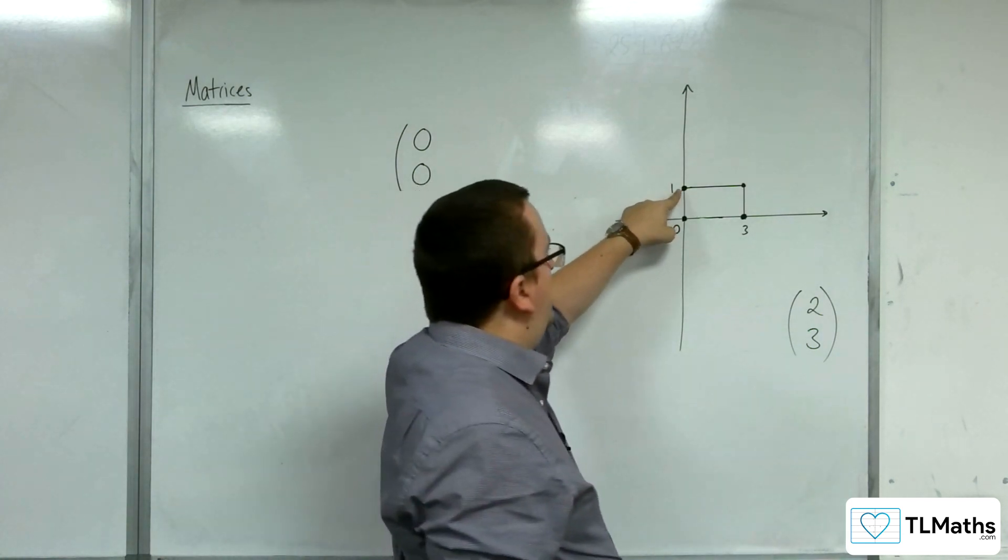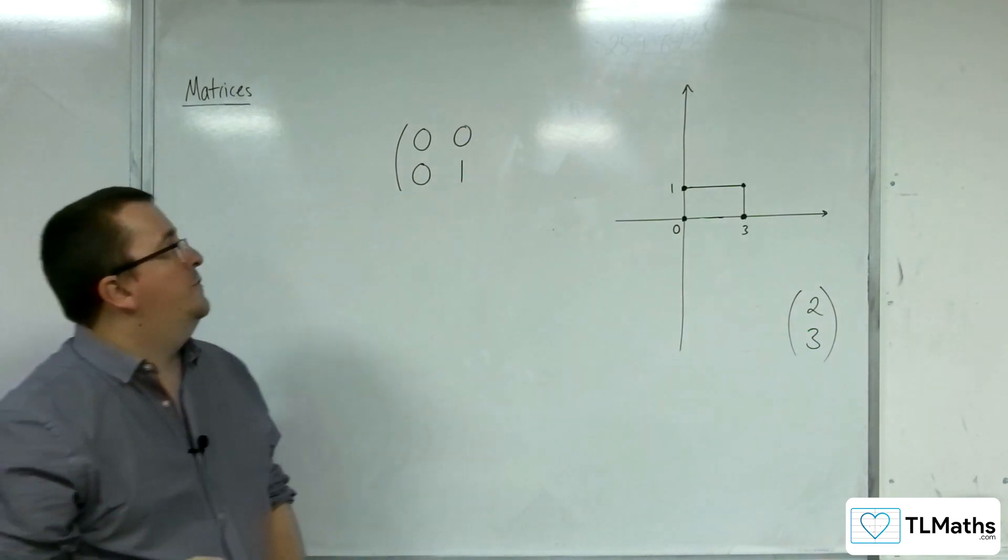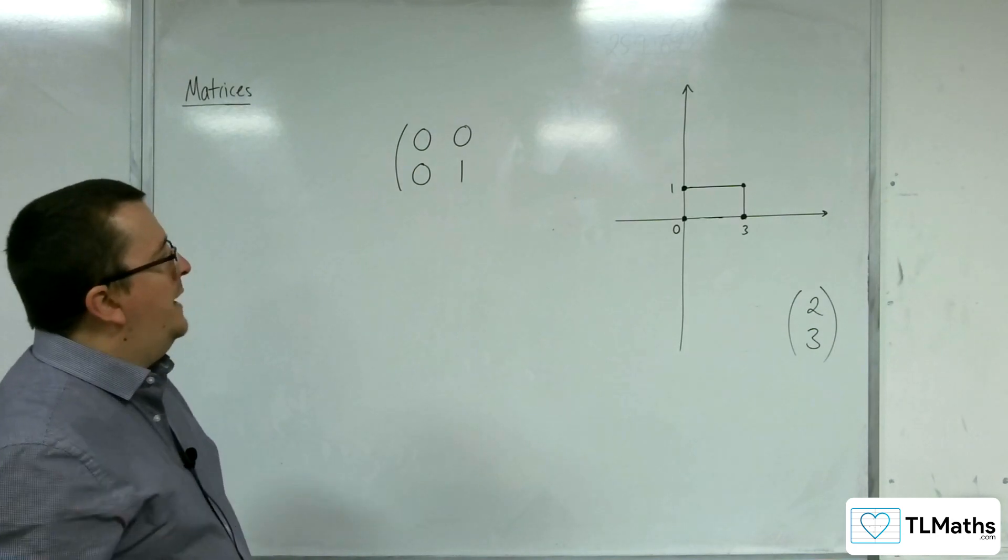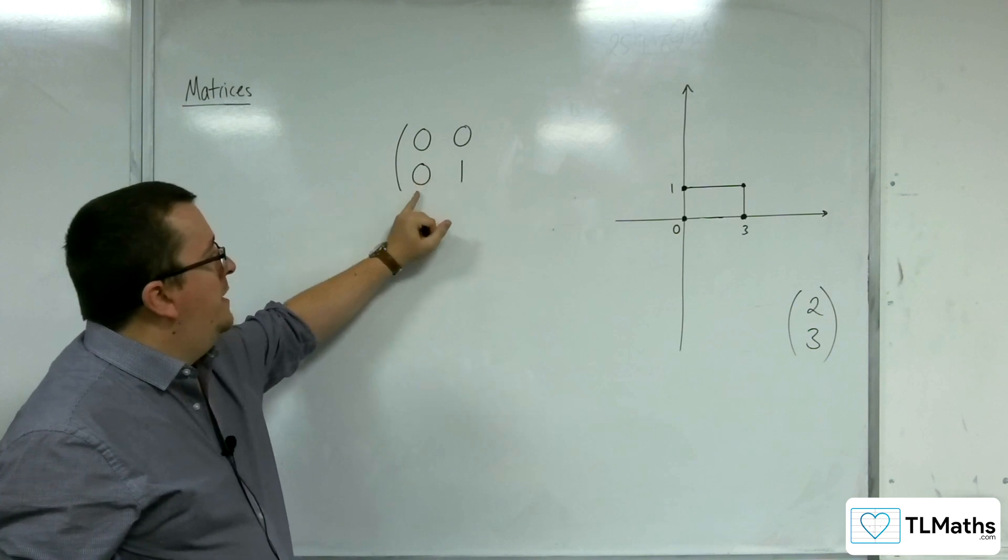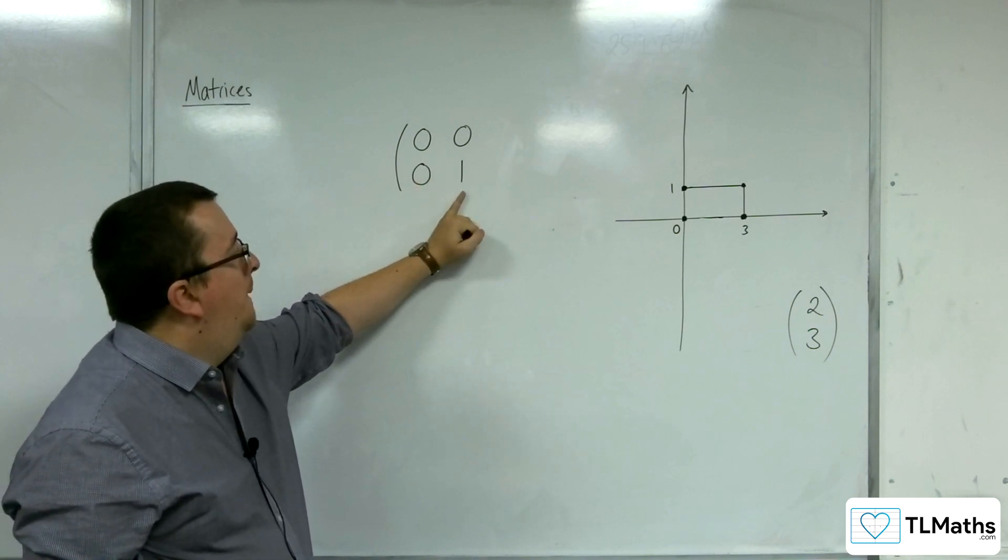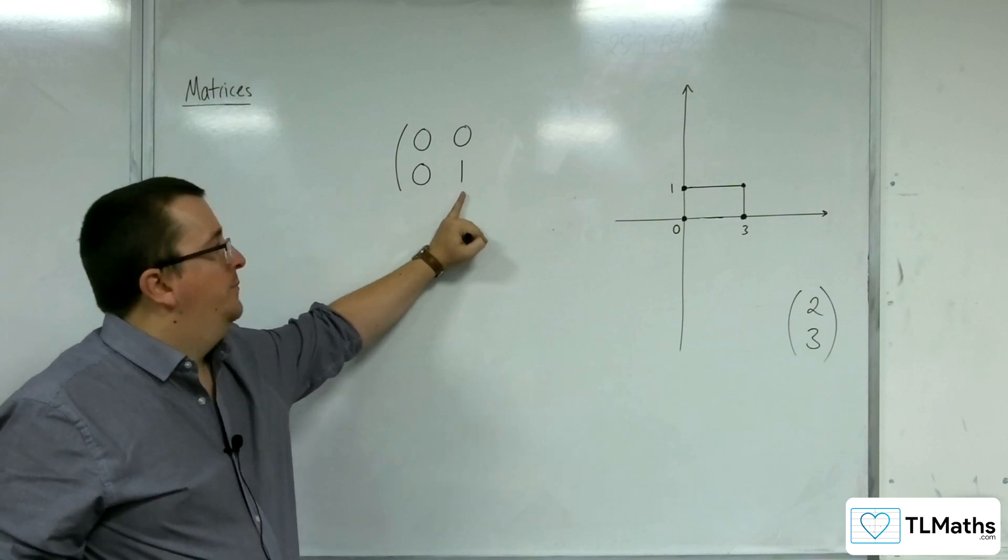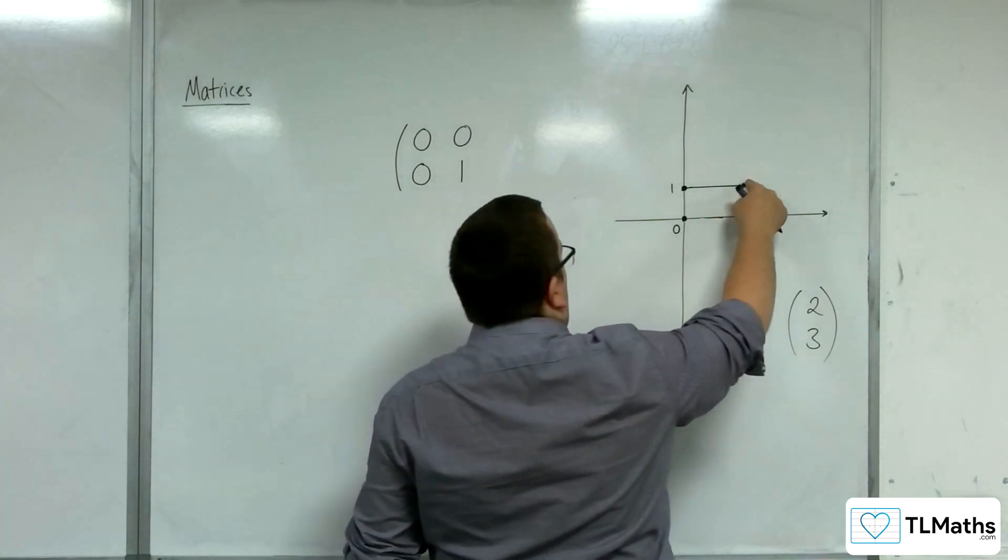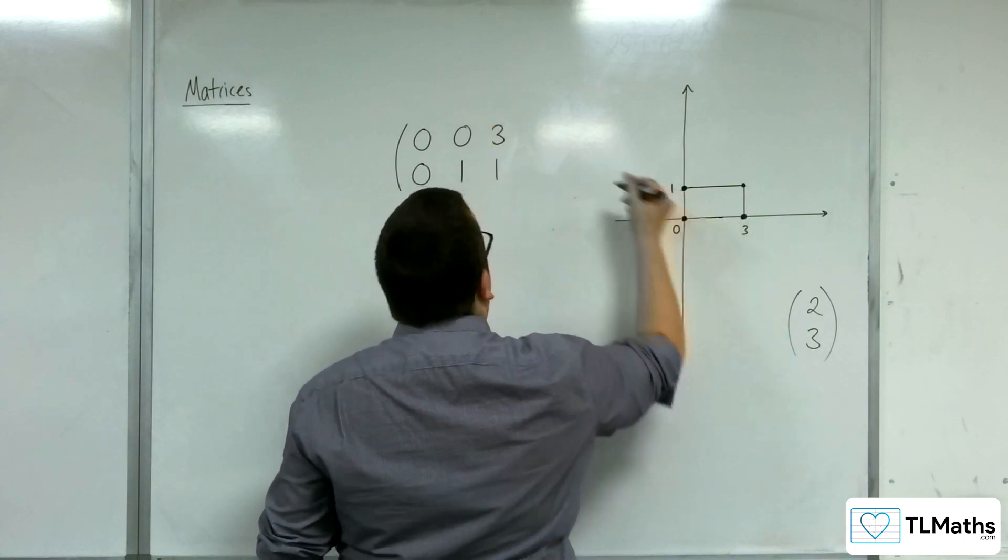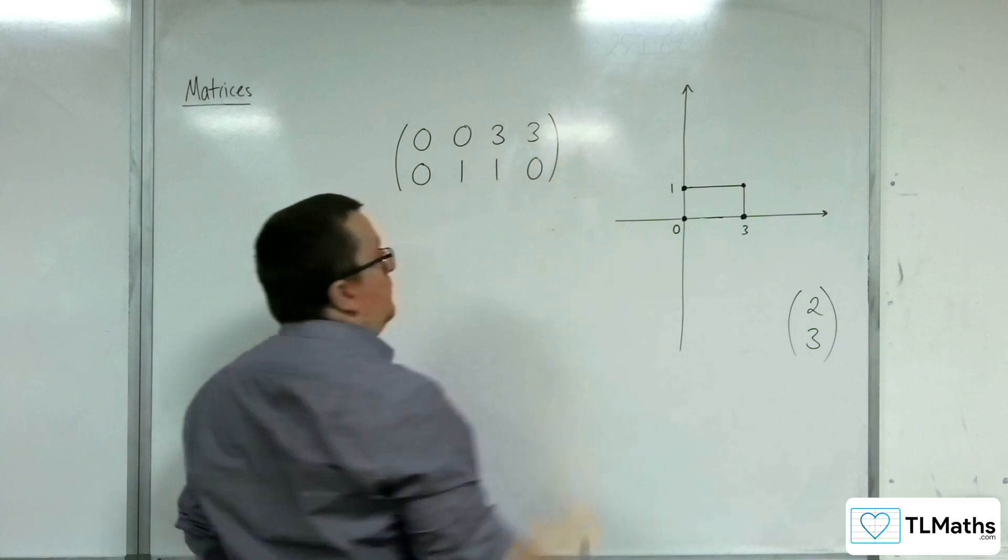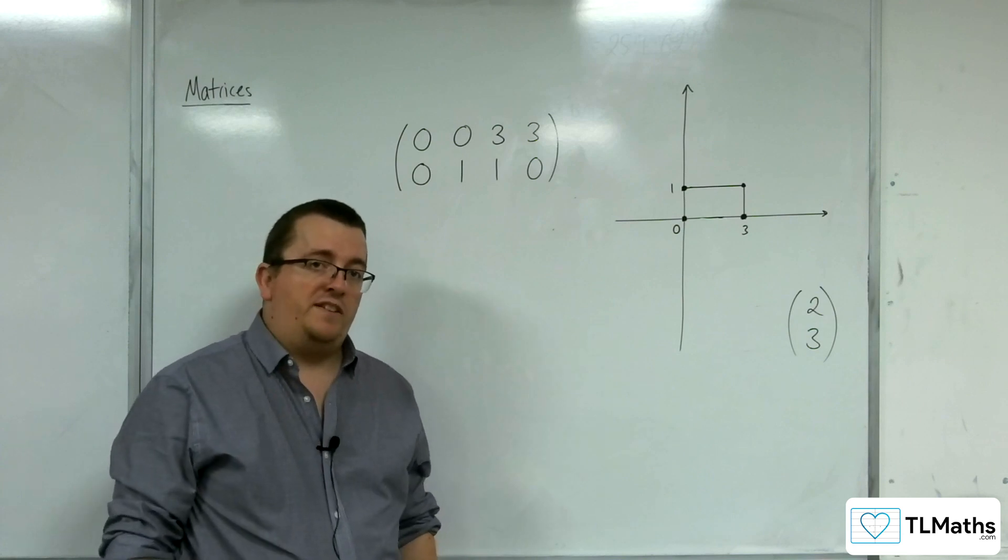Then I've got the point here, 0, 1. So it would also have its position vector as 0, 1. But you can see how I'm starting to represent each of the vertices of my shape with a separate column in a matrix. This point would be 3, 1, and this point would be 3, 0.